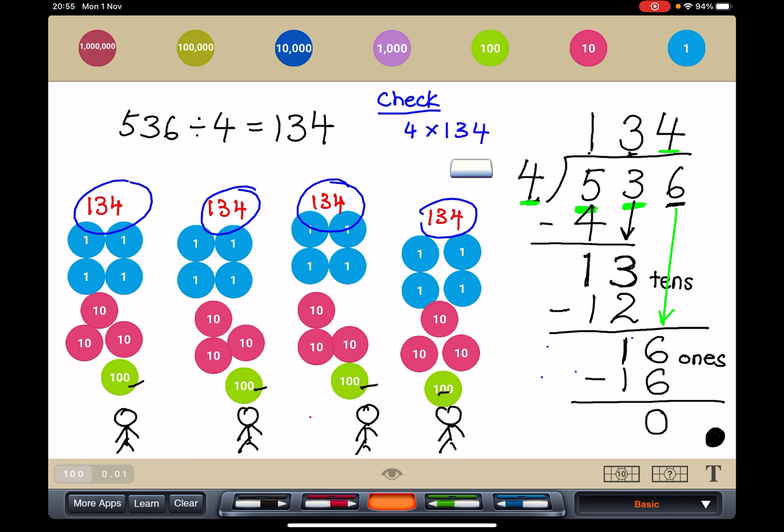Or I can write it in standard algorithm. I'm going to write 134 times 4 so that I can check. 4 times 4, 16. Regroup. 3 times 4, 12 plus 1, 13. Regroup. 1 times 4, 4 plus 1, 5.